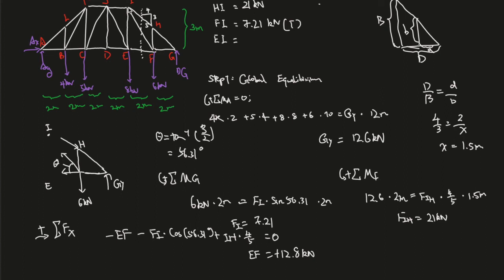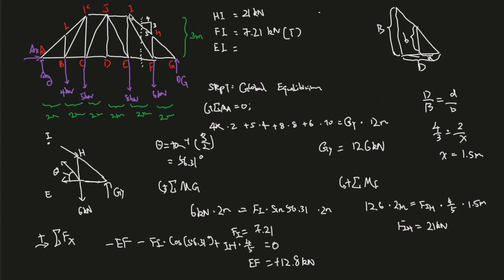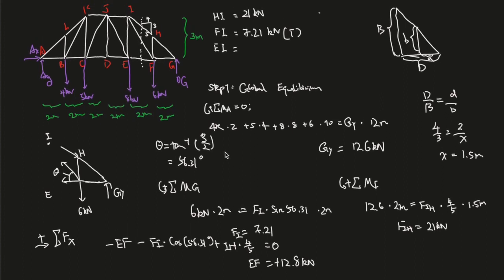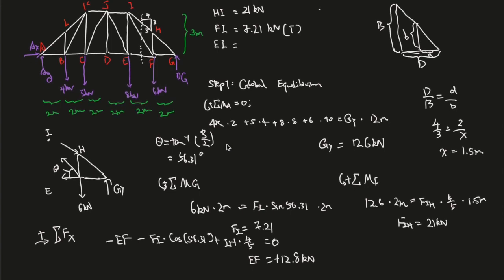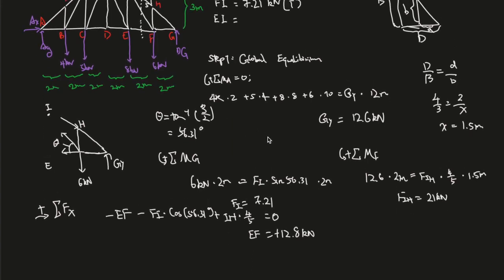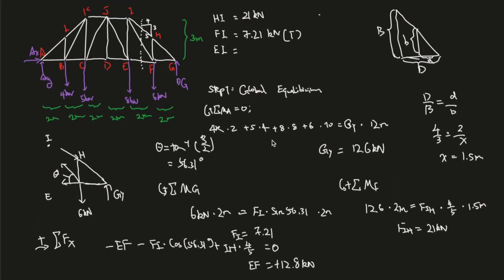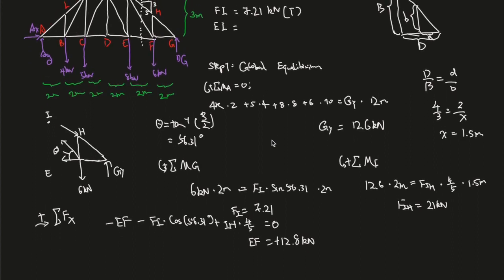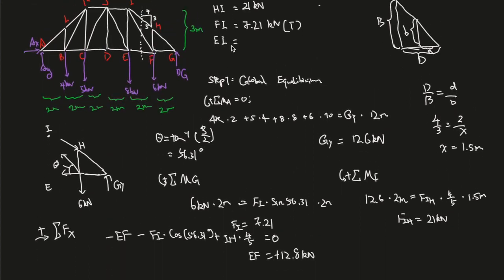And then without having to using external moments at a different point. But if you do want me to make a video on that, I would definitely do it. So it's just I wanted to show you an alternative method that I've discovered, I guess, while I was trying to do this question. So yeah, sorry, EF. Now it just looks like E. EF over here is 12.8 kilonewtons.